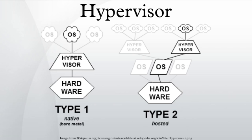In their 1974 article "Formal Requirements for Virtualizable Third Generation Architectures," Gerald J. Polk and Robert P. Goldberg classified two types of hypervisor. Type 1 hypervisors run directly on the host's hardware to control the hardware and to manage guest operating systems. A guest operating system thus runs on another level above the hypervisor. This model represents the classic implementation of virtual machine architectures.